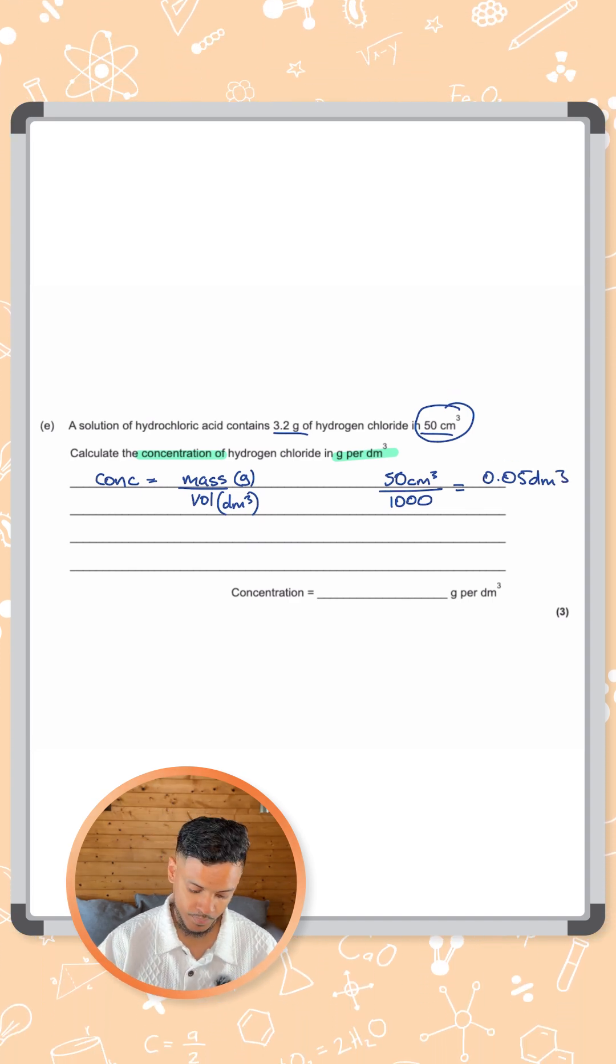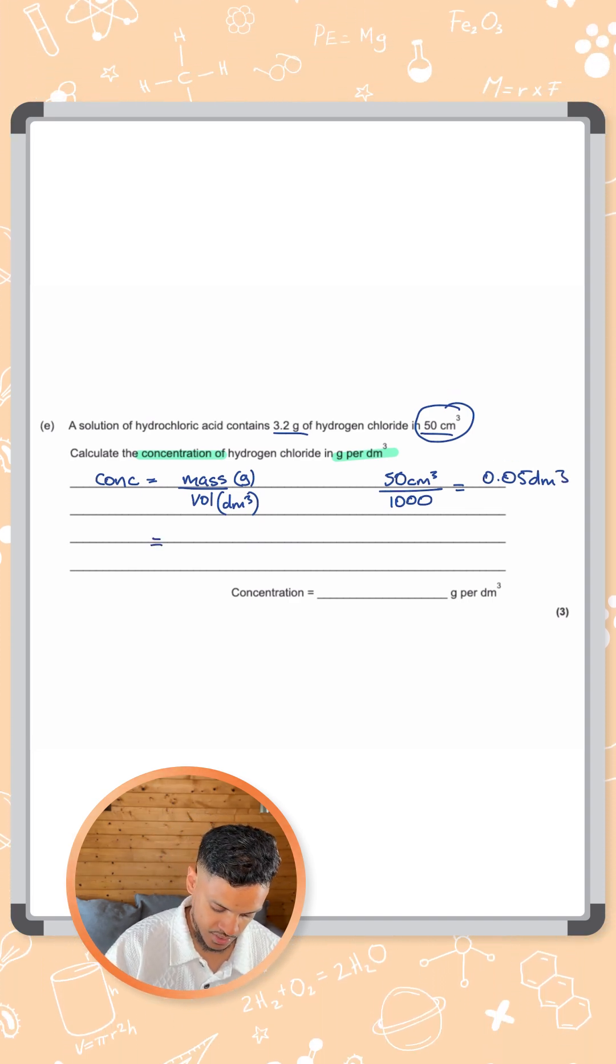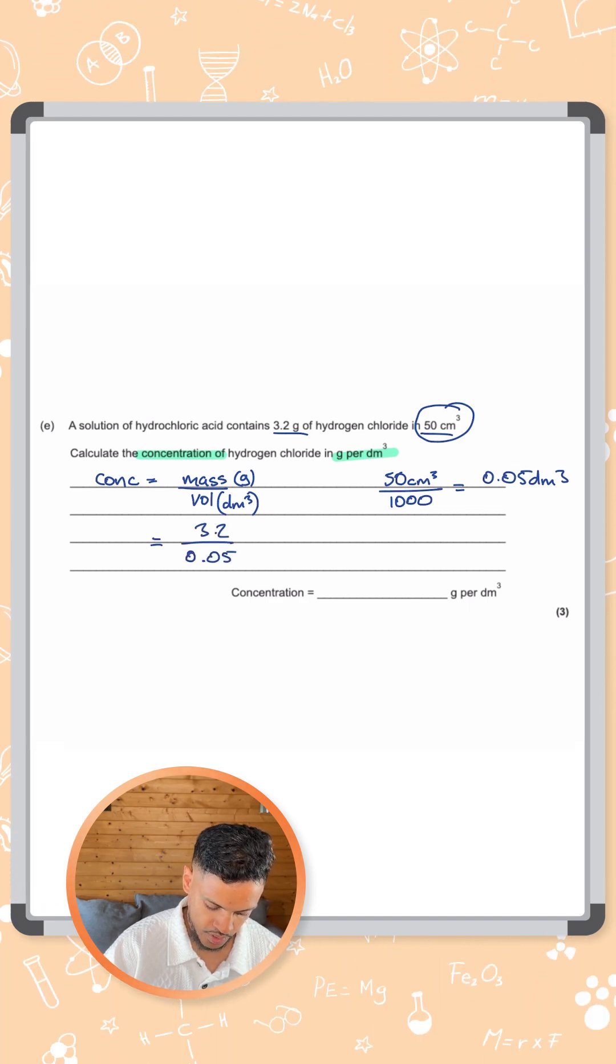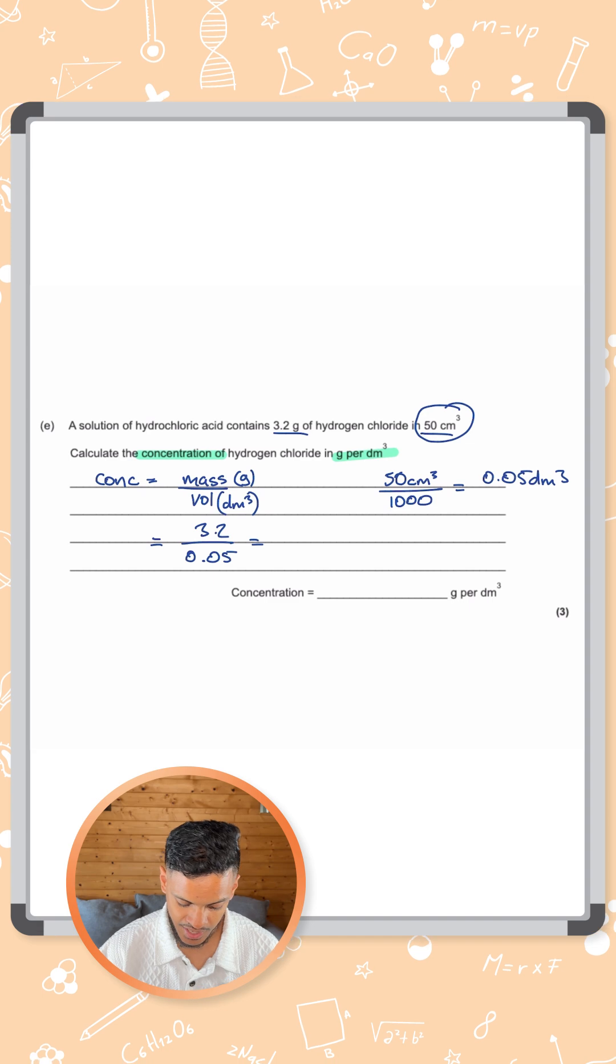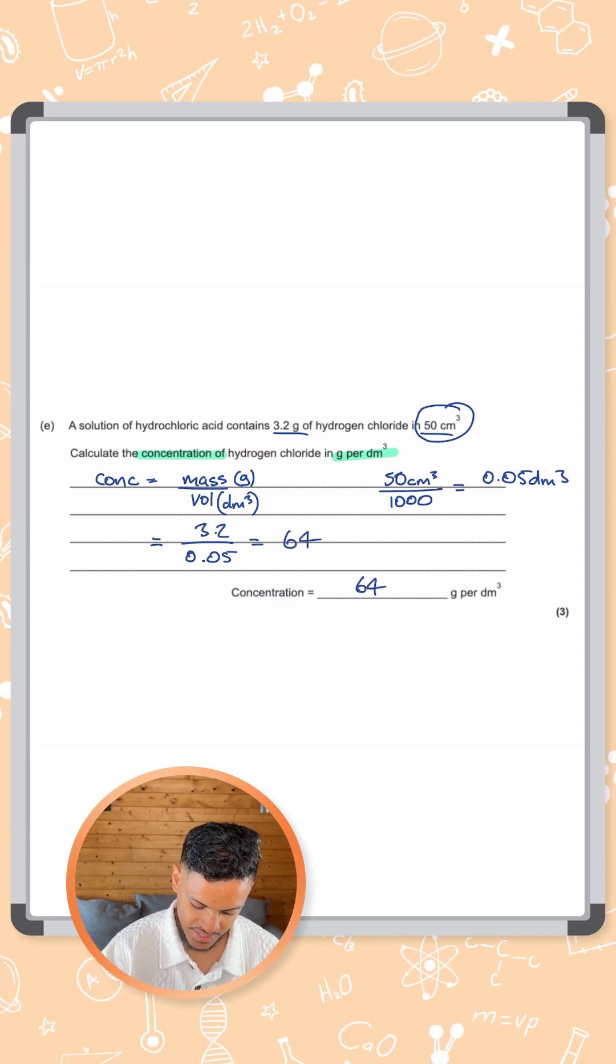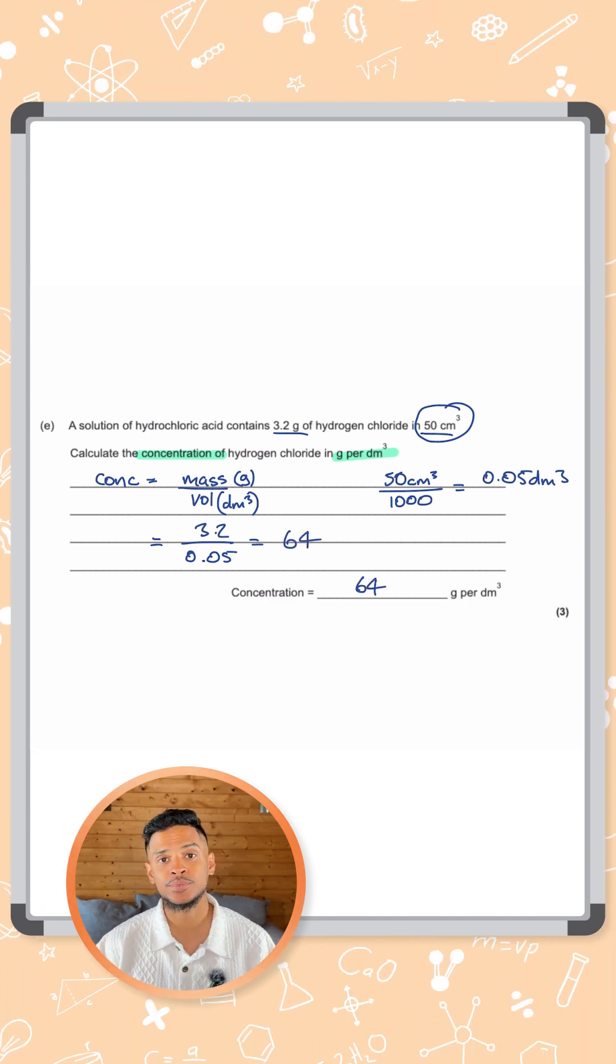Now we can take that volume and put it into the equation: mass 3.2 over 0.05. Put that into your calculator and you should get an answer of 64. So that's 64 grams per dm cubed.